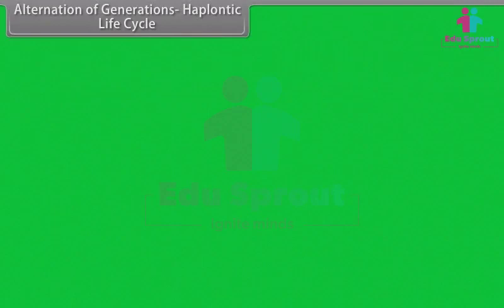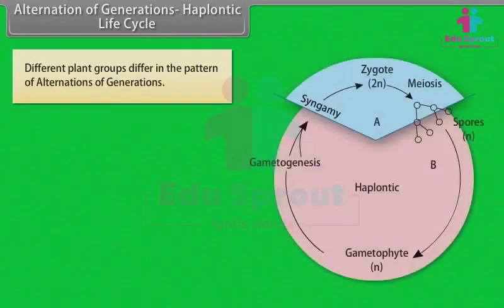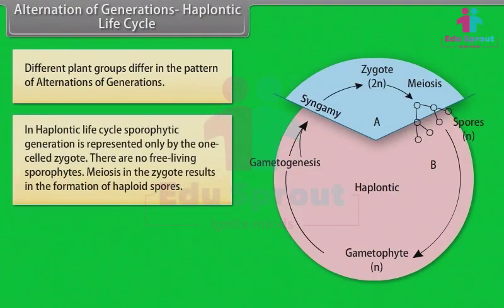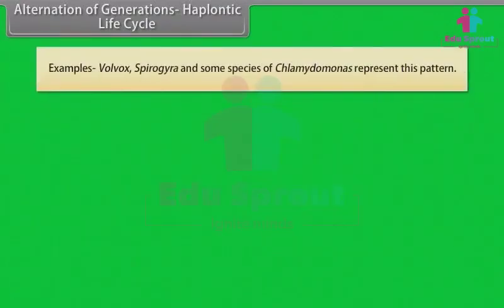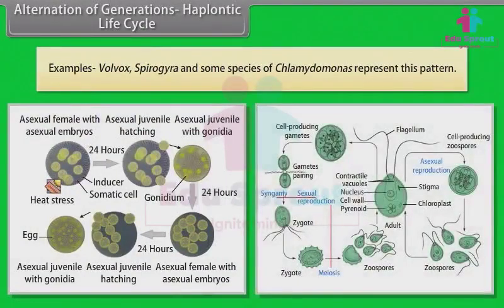Different plant groups differ in the pattern of alternation of generations. In the haplontic life cycle, the sporophytic generation is represented only by the one-celled zygote. There are no free-living sporophytes. Meiosis in the zygote results in the formation of haploid spores. The haploid spores divide mitotically and form the gametophyte — the dominant photosynthetic phase in such plants is the free-living gametophyte. Examples include Volvox, Spirogyra, and some species of Chlamydomonas.